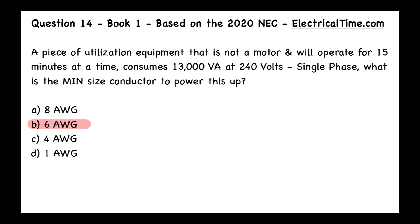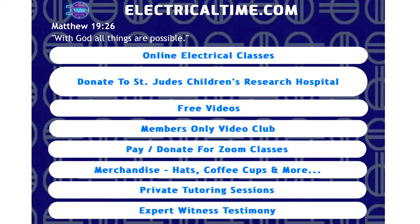When you see VA and volts, you might think Ohm's law or the PIE formula, but let's highlight the important information. We have 13,000 VA at 240 volts single phase. This is not a motor, so we're not dealing with Article 430. The equipment operates for 15 minutes at a time, so this is not considered a continuous load.